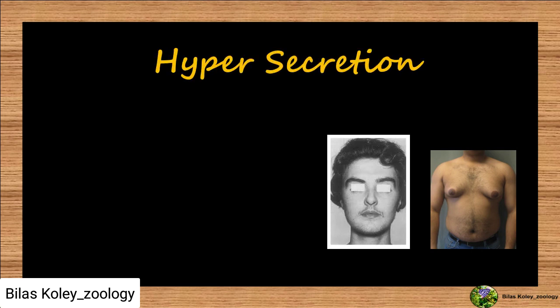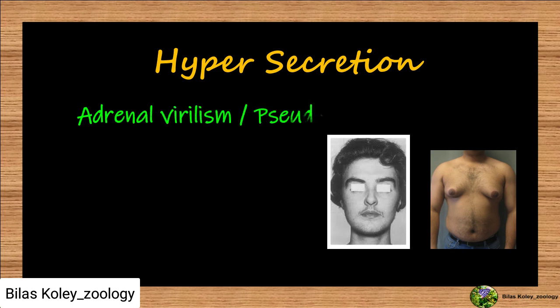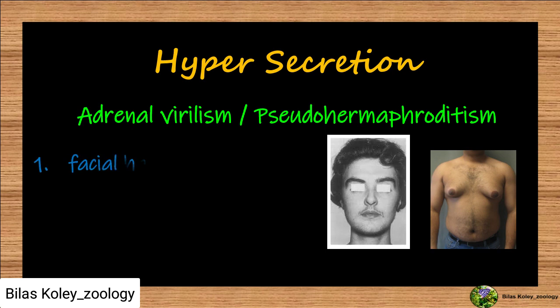Oversecretion of sex corticoids in females causes adrenal virilism, or pseudo-hermaphrodite disease, in which male-type secondary sexual characters such as facial hair and deepened voice appear in females.